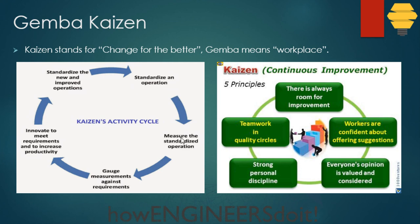We have five principles of Kaizen, but first let's look at what the Kaizen activity does. We can see here: first, standardize an operation; then measure the standardized operation; and then gauge that measure against the requirement to see if the customer requirement is met.